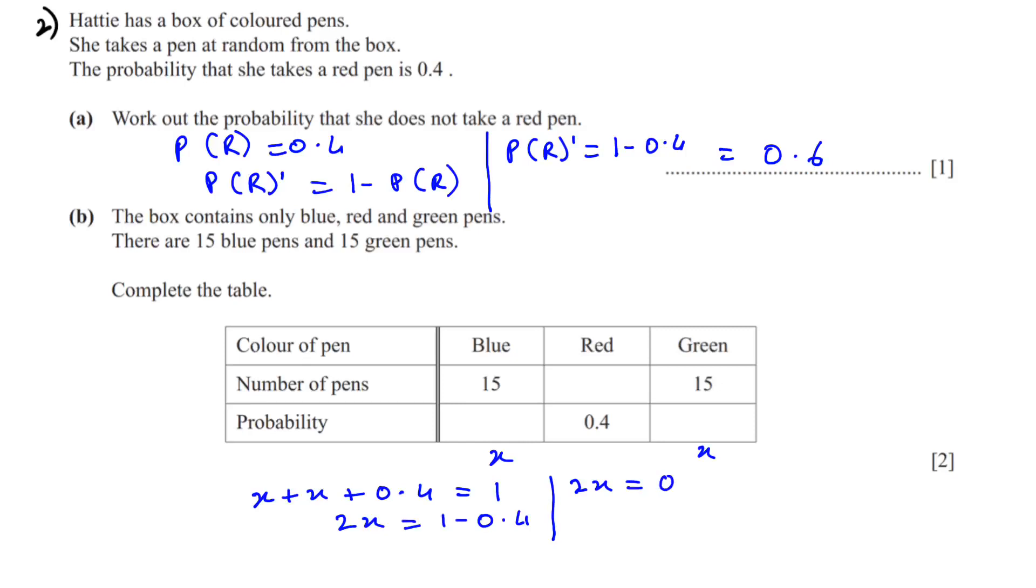2x is equal to 0.6. Divide by 2 both sides, you will get 0.6 divided by 2 is 0.3. So x is 0.3, which means this is 0.3, 0.3, and this is 0.3.